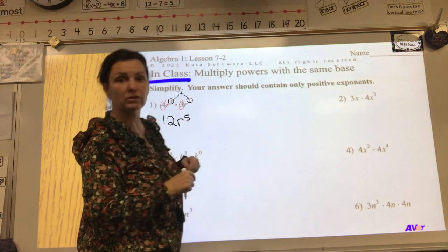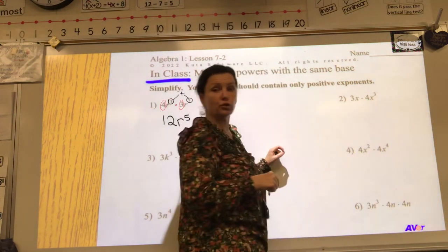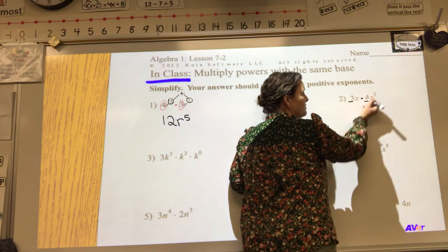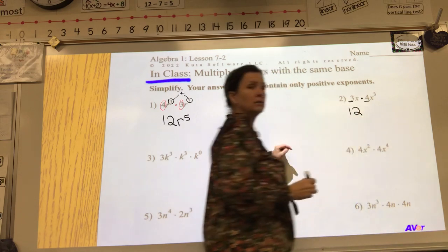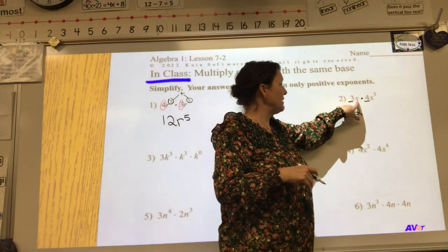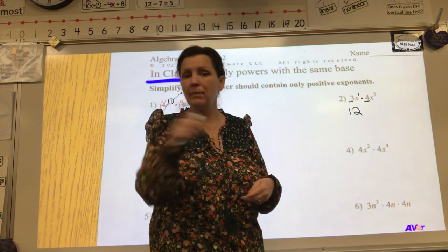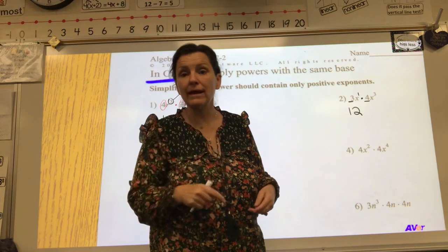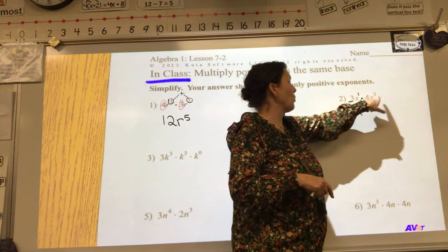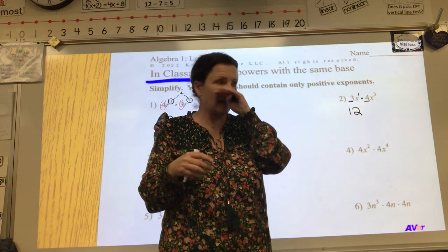Let's try that one more time over here. So we have multiplying two terms here. Let's multiply our front numbers. Three times four is 12, and then we have like bases again. So I have one X. Remember, if we don't see the exponent, it is allowed to be an invisible one, but if you're a visual learner like me, write that in, okay? So we have one X, and then someone handed me three more X's.